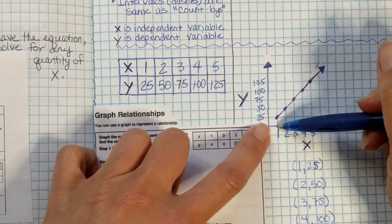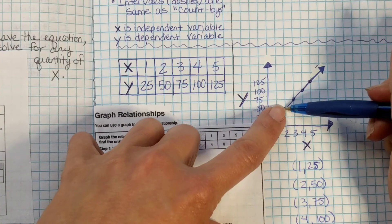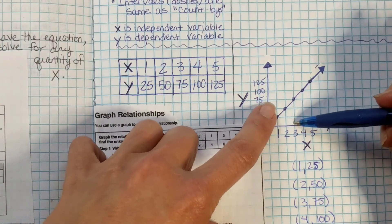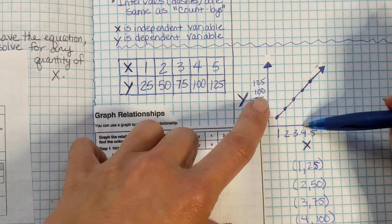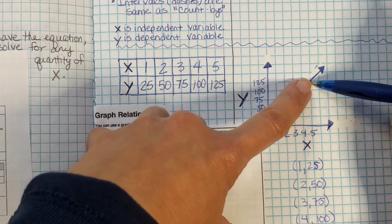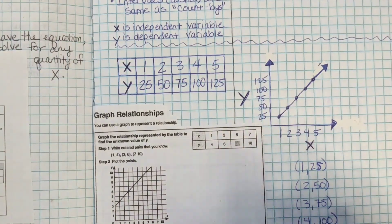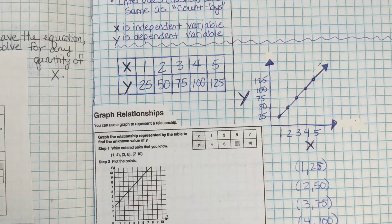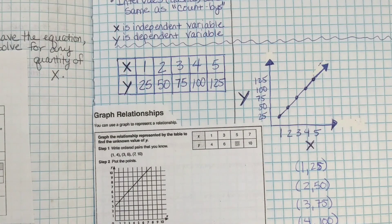So 1, 25, 2, 50, 3, 75, 4, 100, 5, 125. Alright, you may copy the notes. Either pause this or go ahead and copy the notes from the PDF that's included in the Google Classroom.